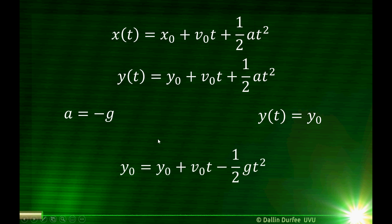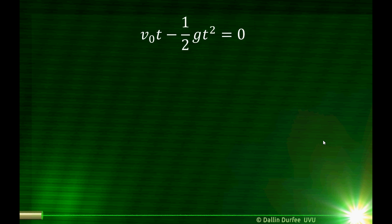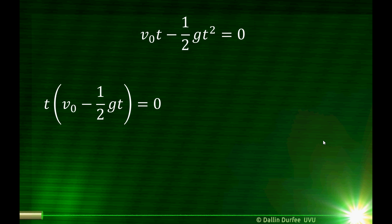Plugging those into the equations, the y-naughts cancel out. So the equation I need to solve is v-naught t minus one-half gt squared equals zero. This is a quadratic equation, but since all terms have a t, I'll factor out a t. This equation becomes t times (v-naught minus one-half g times t) equals zero. So either t equals zero, or v-naught minus one-half gt equals zero.